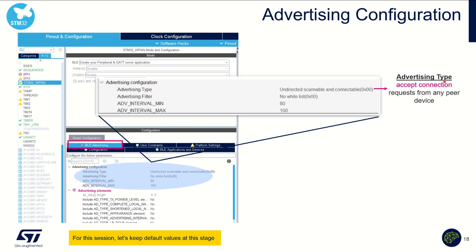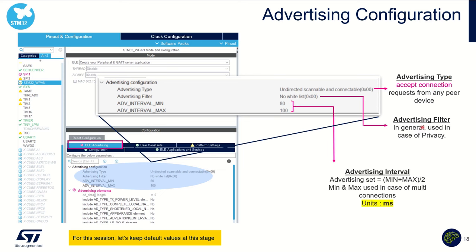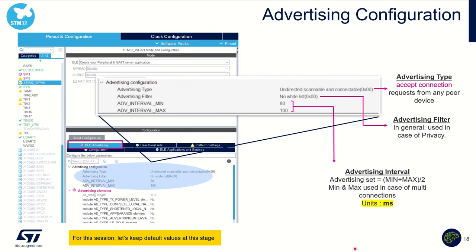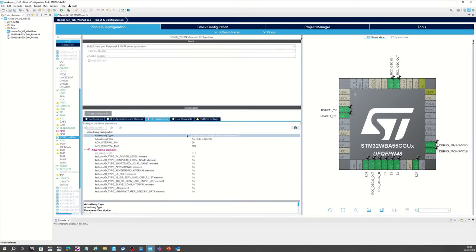We are willing to accept all connections from any smartphone, meaning we are not using privacy, so the advertising filter is disabled. For the advertising interval, since we are dealing with one connection, the min plus max divided by two gives us the advertising interval. The value is in milliseconds. For now, let's open CubeIDE and keep the default settings — we will advertise at approximately 100 milliseconds.